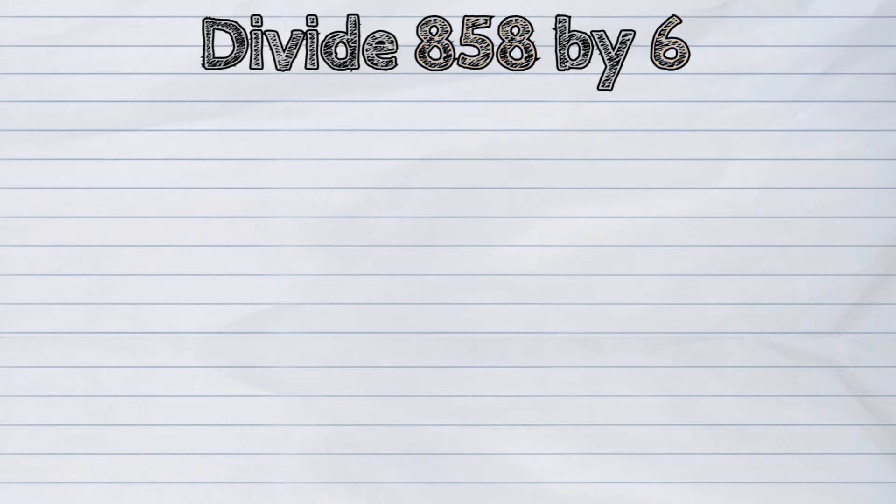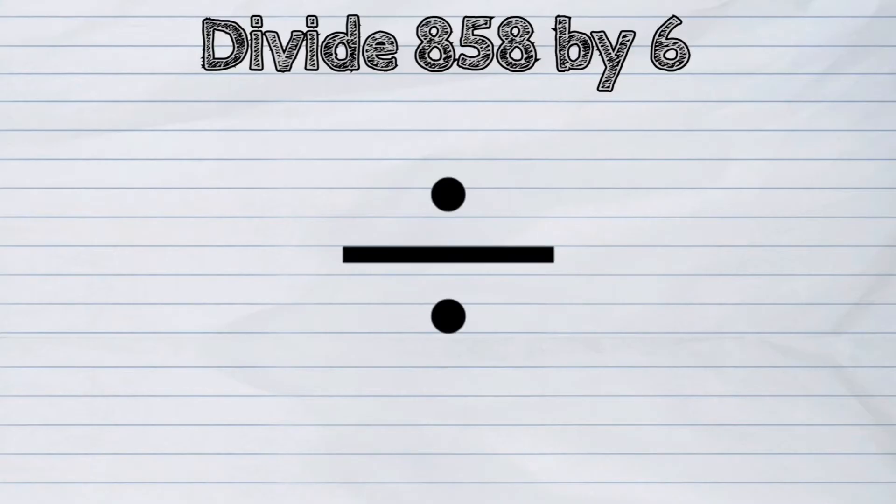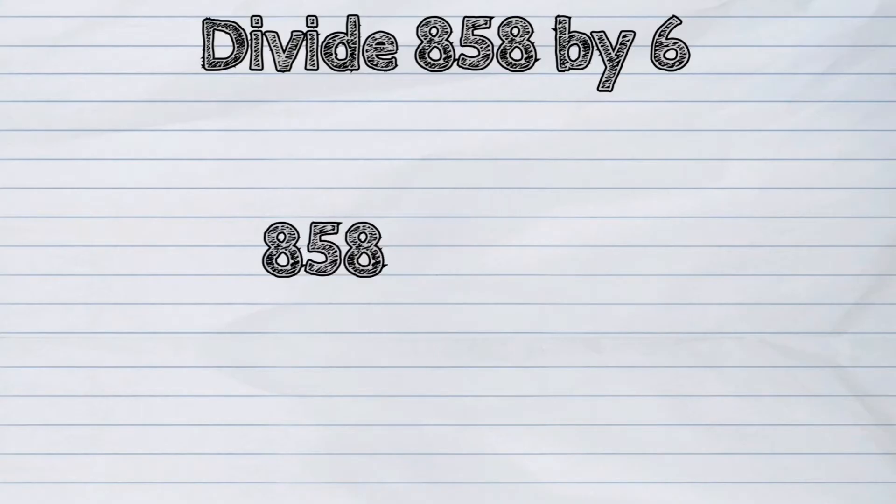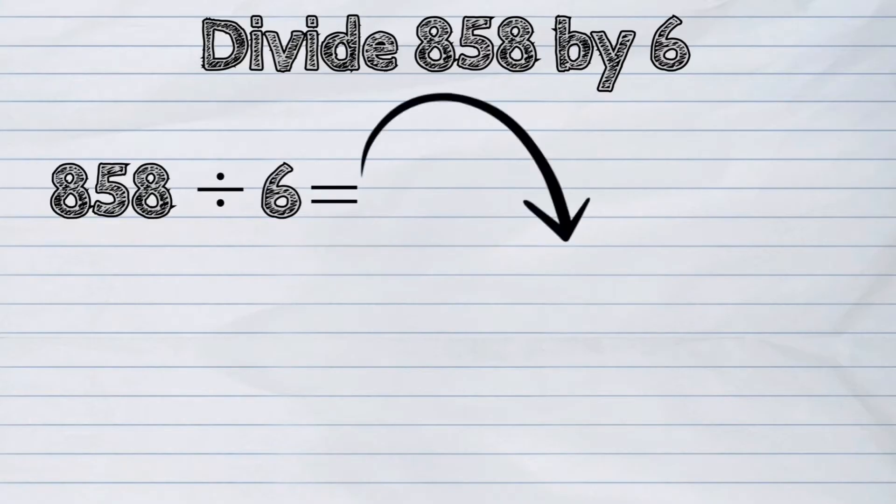The usual written symbol in division is this. In computer applications, the forward slash symbol is used. So we write 858 divided by 6, but conventionally we write it as this.